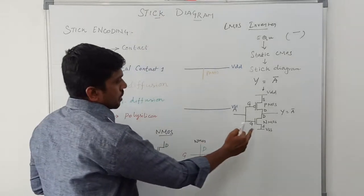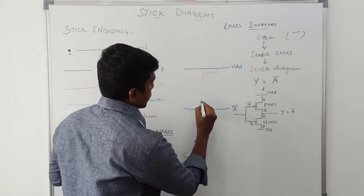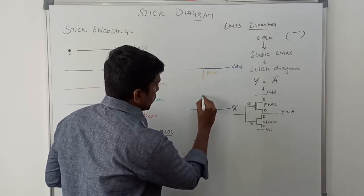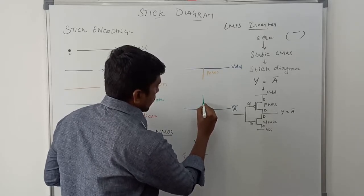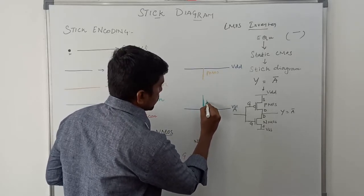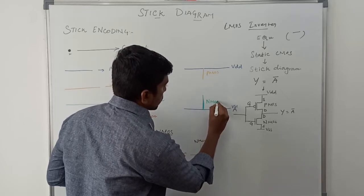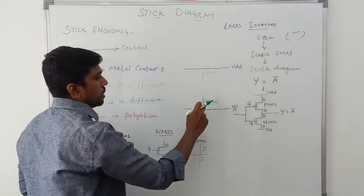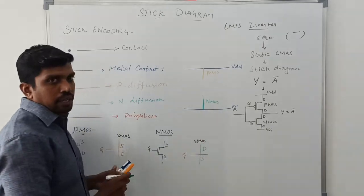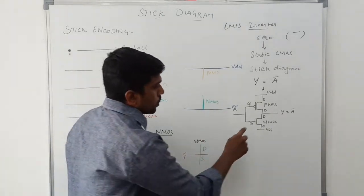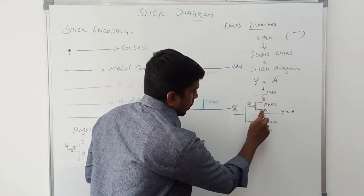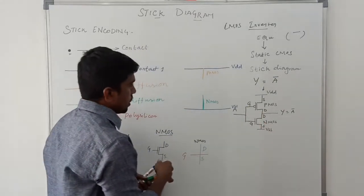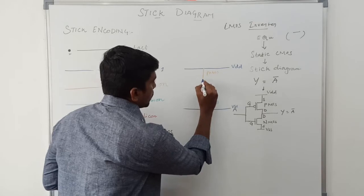The next one is the NMOS transistor. NMOS is drawn, and PMOS is connected to VDD while NMOS is connected to VSS. Then we take the metal contact for PMOS and NMOS, using blue color.